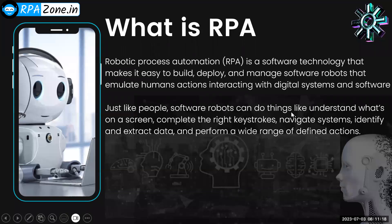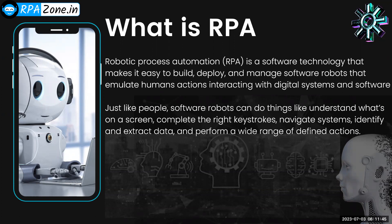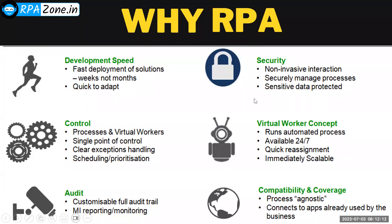Robotic Process Automation is a software or technology that makes it easy to build, deploy, and manage software robots that can emulate human actions when interacting with digital systems and software. Just like people, software robots can understand what's on the screen, complete keystrokes, perform navigation, and extract data. With RPA, we can automate repetitive human tasks.